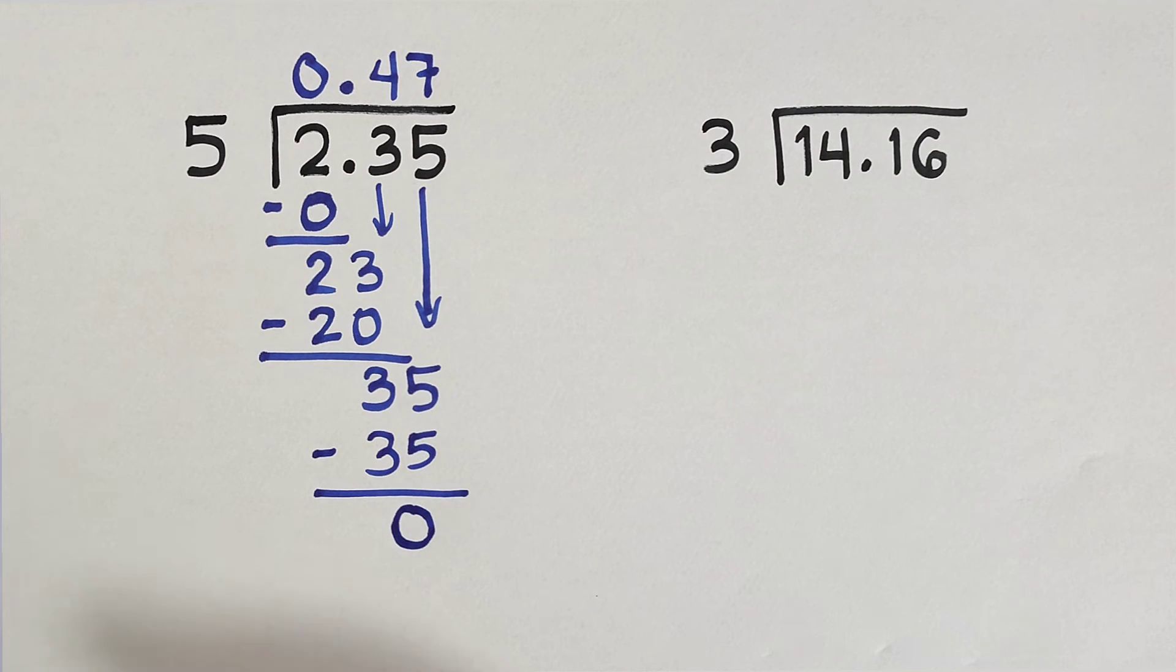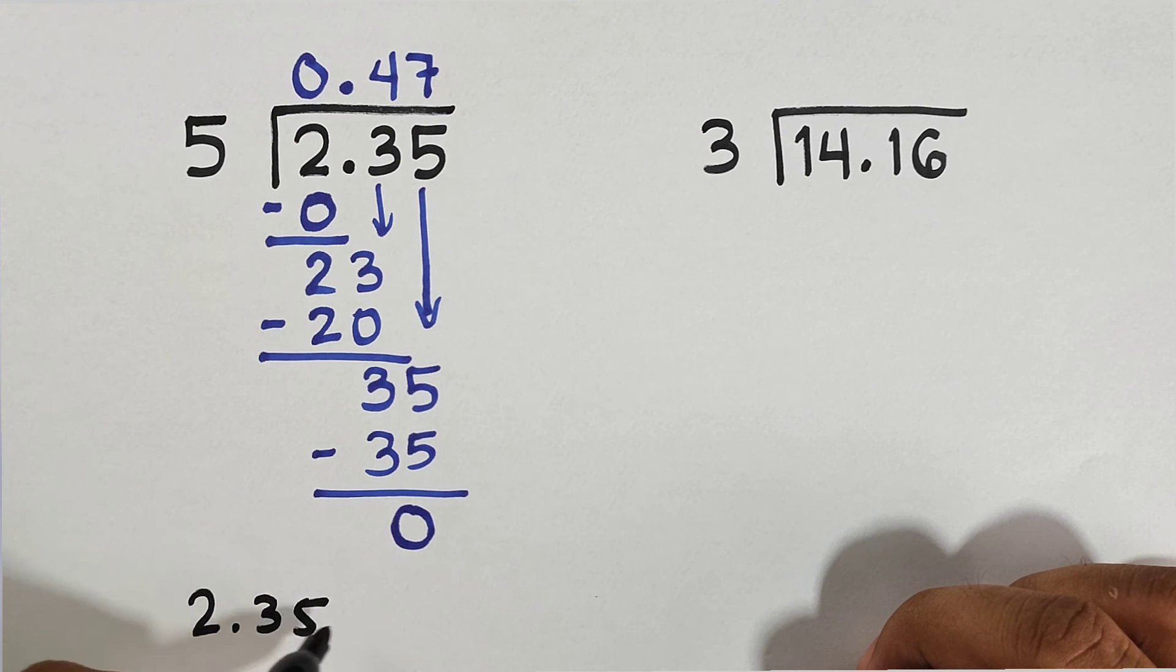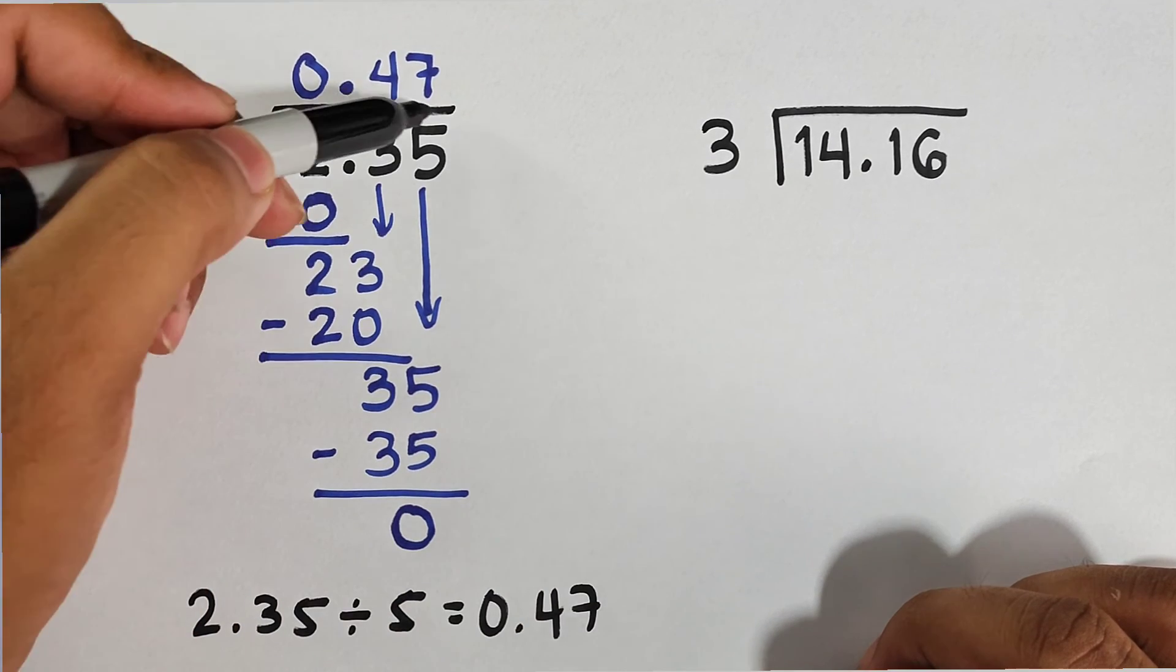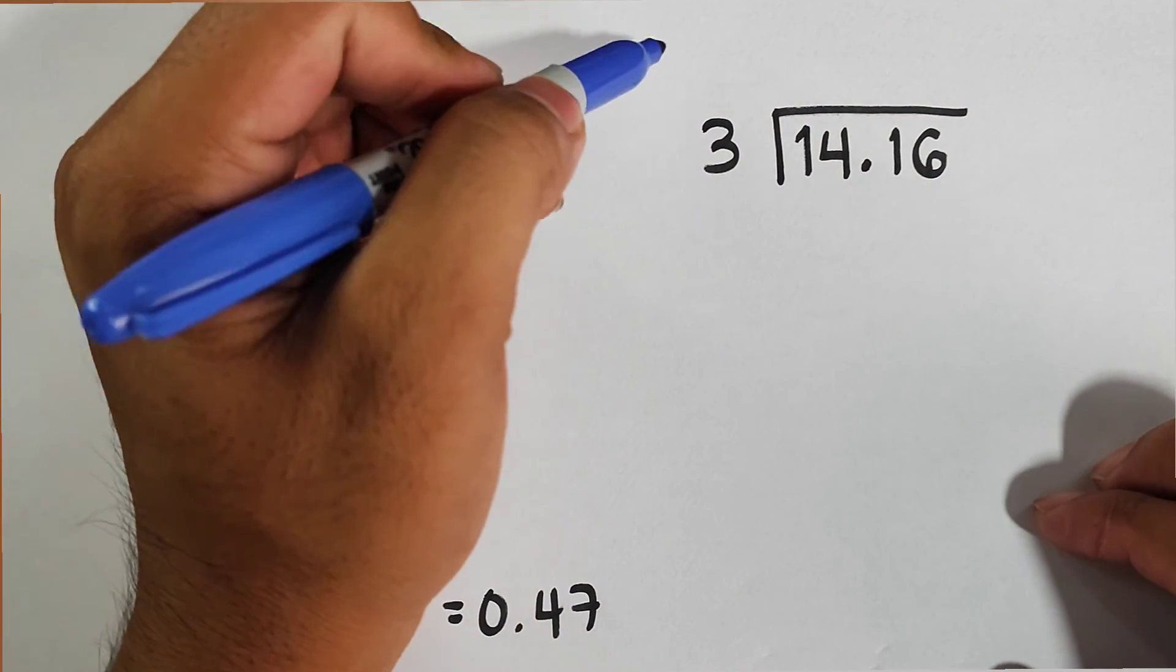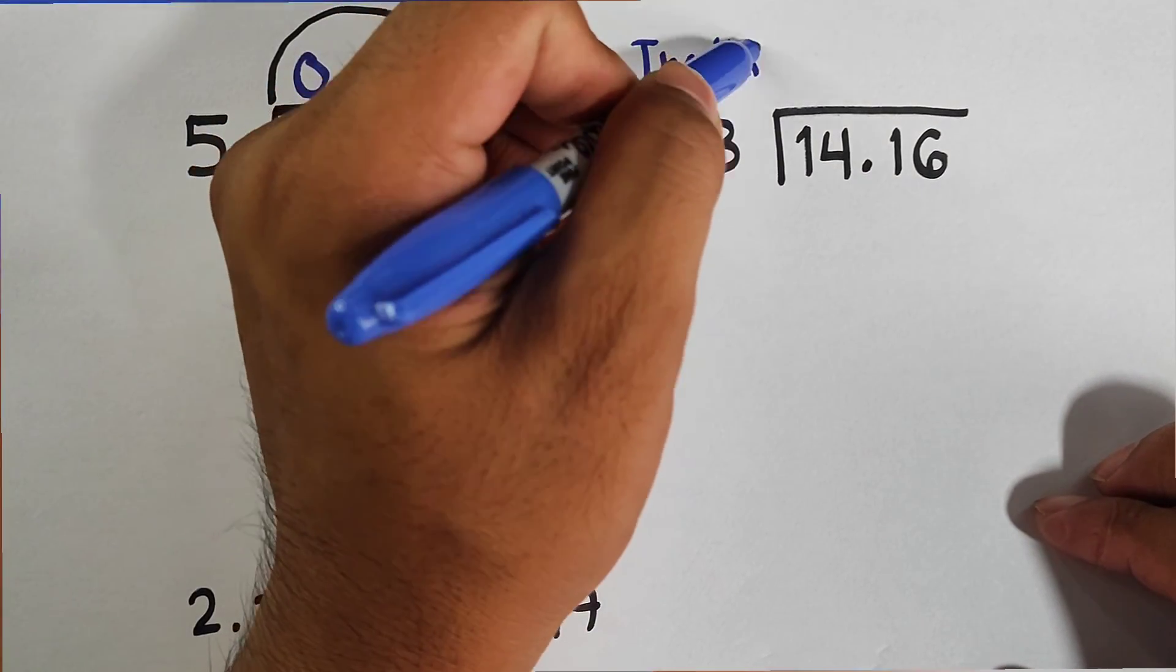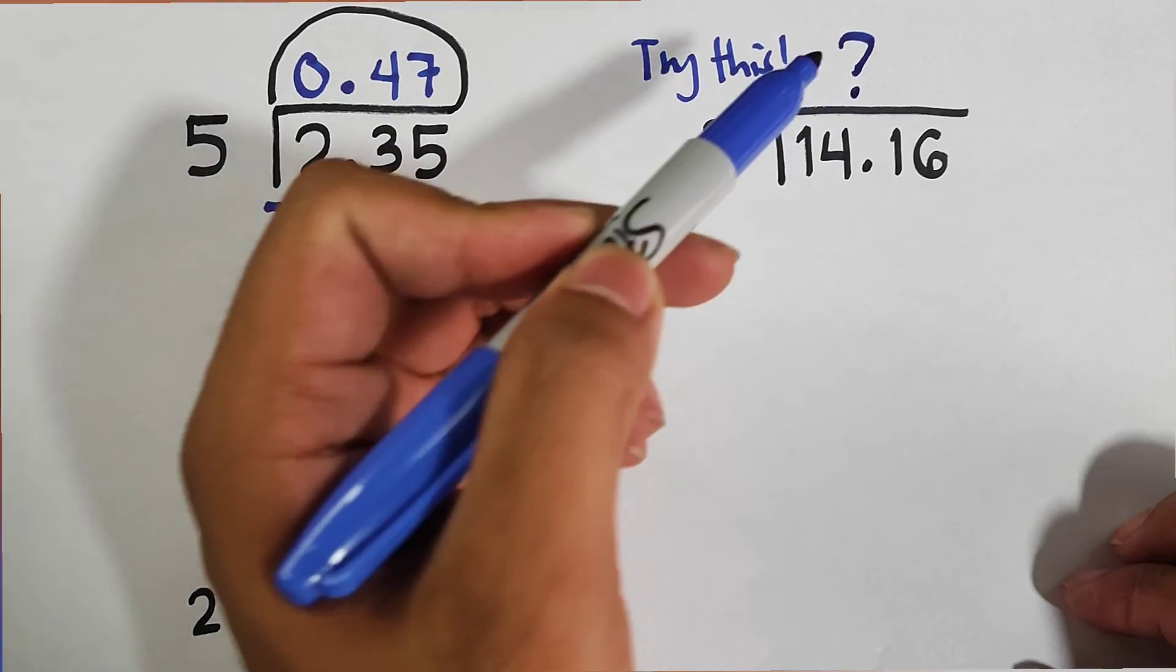Now subtracting this, it will give you the answer of 0, meaning we will stop dividing. Simply means that if you divide 2.35 by 5, that equals 0.47, and this is our answer guys. Now guys, I hope you can find the first three examples on how to divide decimals by whole numbers. And as part of our routine, I want you to try this example in which I hope to see in our comment section what is your answer when you divide 14.16 by 3.